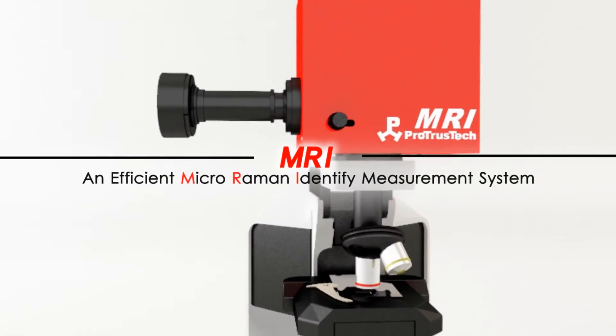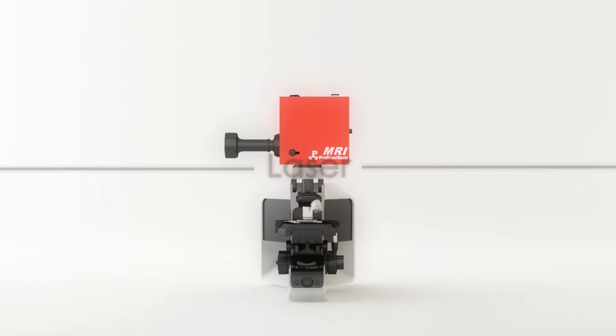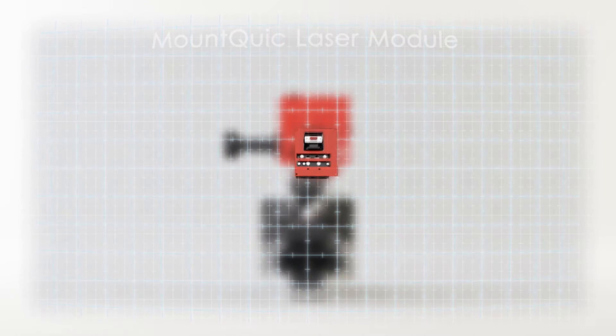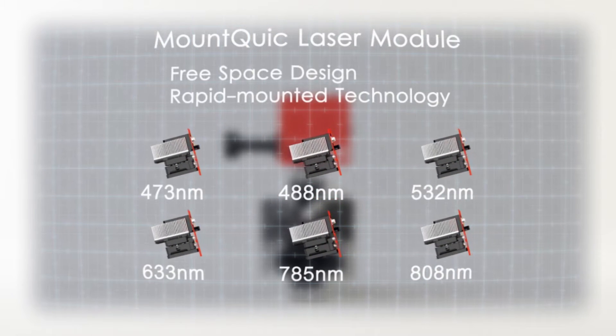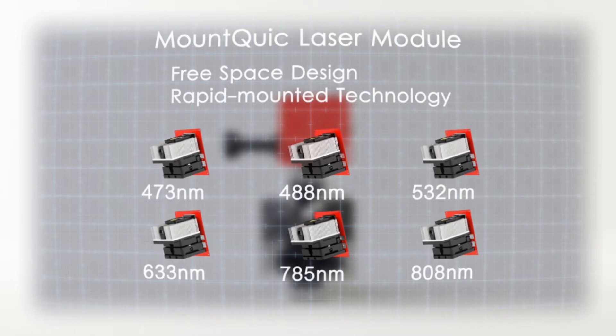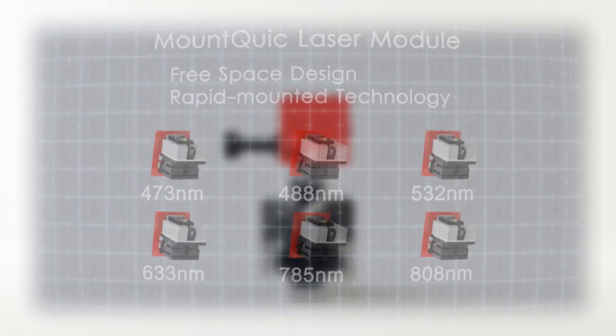MRI is an efficient micro-Raman measurement system developed by ProTrust Tech. ProTrust Tech's exclusively patented MountQuick technology allows quick alternation between laser modules and is built with specially designed free-space laser, which enables light application rate up to 100%.